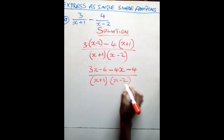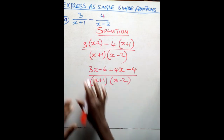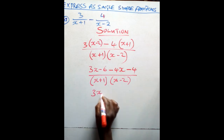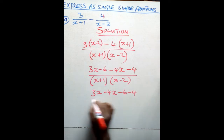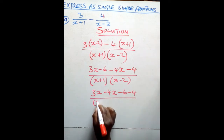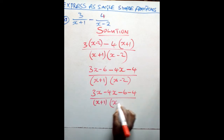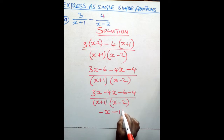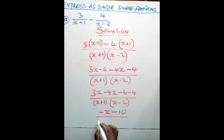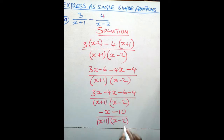Negative 4 times positive 1 will give you negative 4, over (x plus 1)(x minus 2). After doing that, collect the like terms. You have 3x minus 4x, then minus 6 minus 4, over (x plus 1)(x minus 2). That gives you negative x and negative 6 minus 4 will give you negative 10, over (x plus 1)(x minus 2). At this point, you cannot move any further — there is nothing to divide through because there are no common factors.